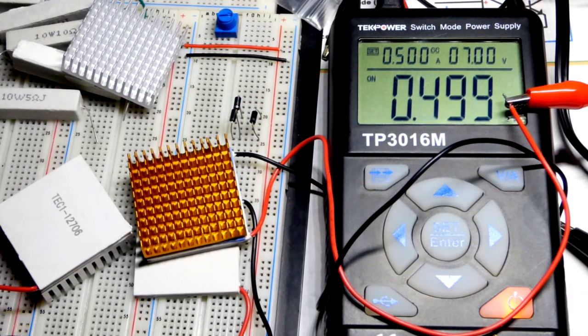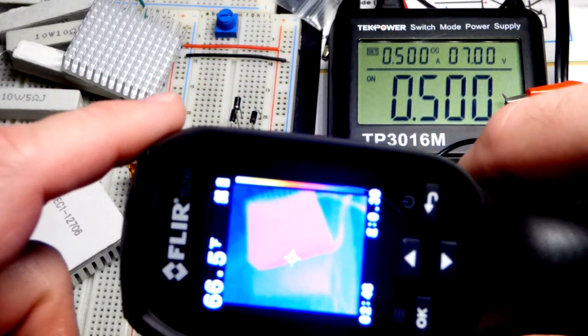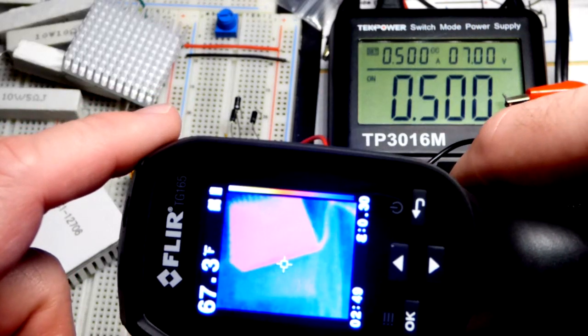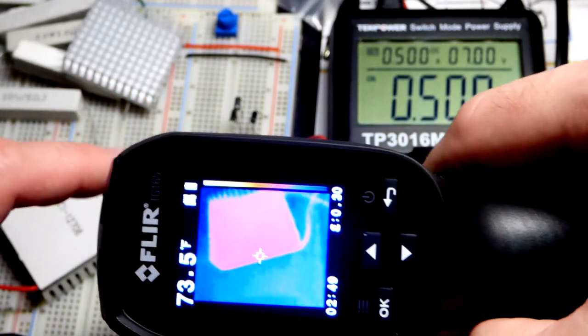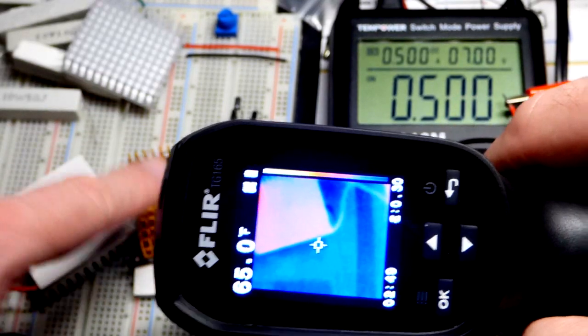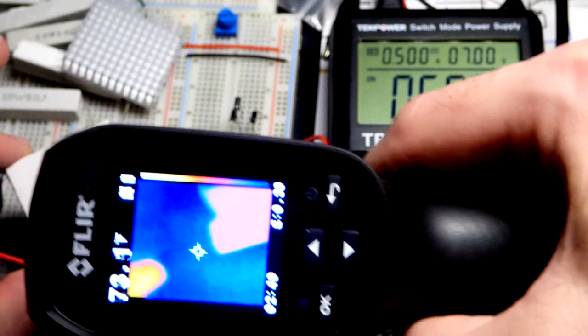I hit the power and I'm going to leave the current at about half an amp, so 0.5 amps or 500 milliamps. There you can see that cooler is getting hot. That's the hot side, the side with the fin. The cooler side is the side with the writing.